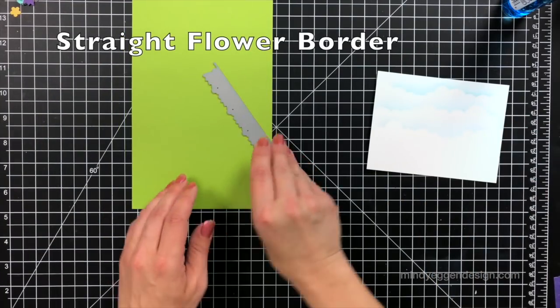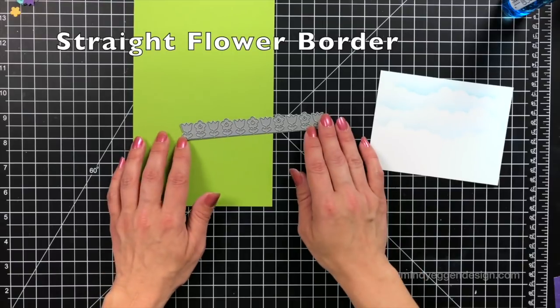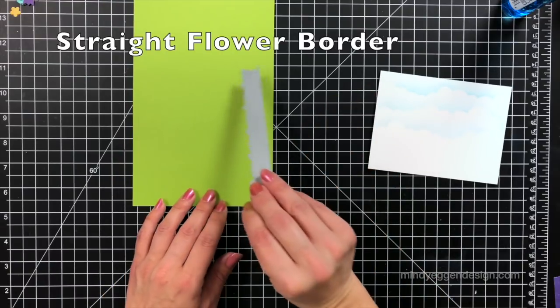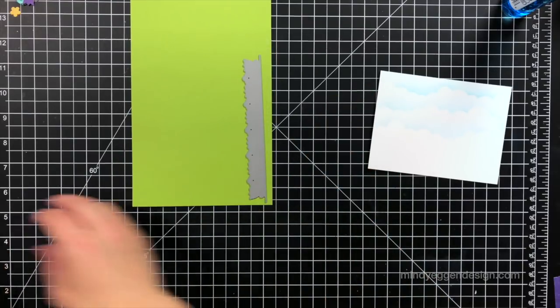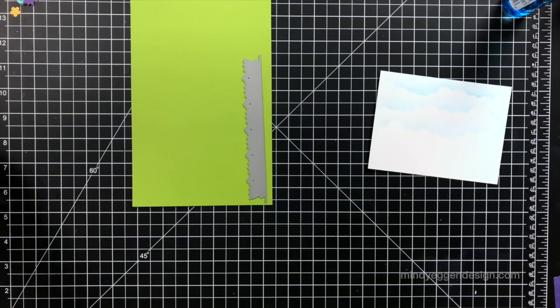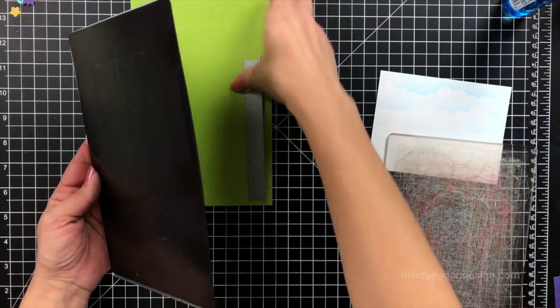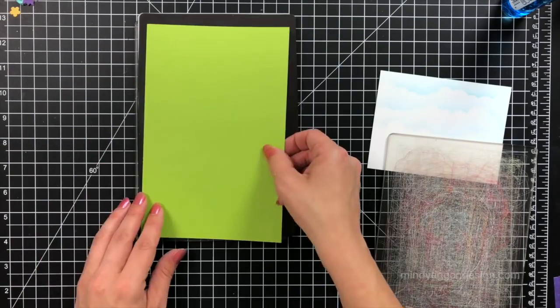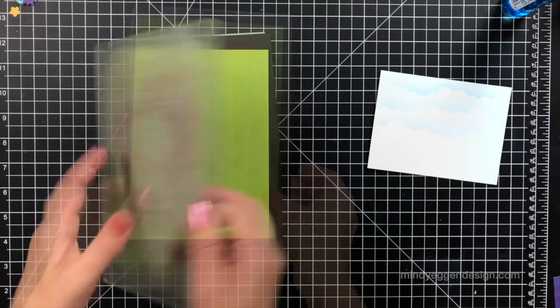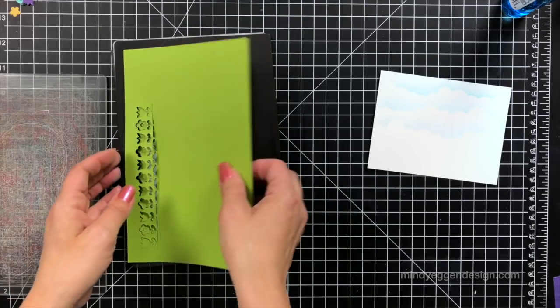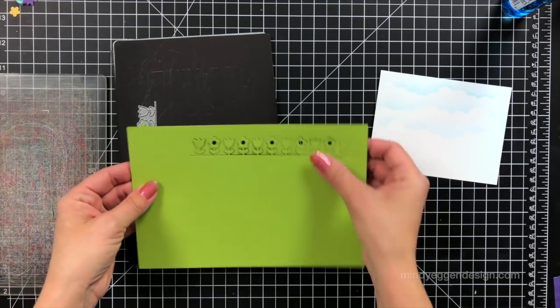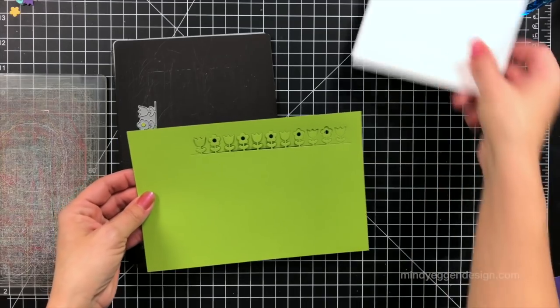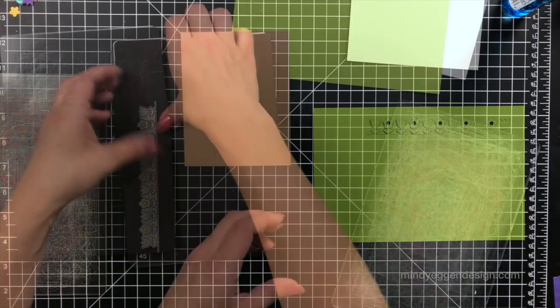Next, I'm going to use the straight flower border to die cut some flowers out. This is going to be cut from some cilantro cardstock. I have my magnetic sheet here that I use for my Gemini Junior. I just lay that cut side up, place my cardstock on top, and I'll run that through my machine. You can see I have plenty of room down at the bottom so I can determine how high I need that to go later on.